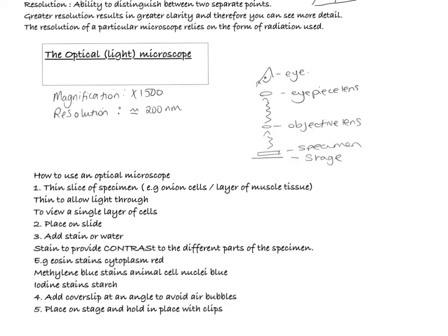So how do we use a light microscope? The first thing we want to do is carefully cut a very thin slice of our specimen. The reason we need it to be thin is twofold. Firstly, because we want to allow the light to get through and secondly, because we only really want to view a single layer of cells or perhaps very small number of layers of cells. Once we've got our specimen, we're going to try and place it flat onto our slide. When we've put it on our slide, we're either going to put a drop of stain or a drop of water on top.